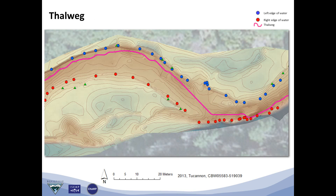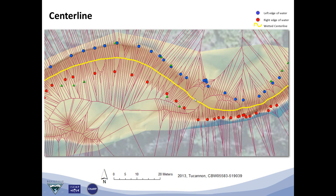The River Bathymetry Toolkit also lays out a thalweg — basically a line that goes through the deepest sections of the channel, through the pools, following the fastest flow path. This line is then used to find residual depth and a series of channel metrics related to deep sections of the channel. The centerline is found by using T's and polygons to find the midpoint between the left and right water's edge.